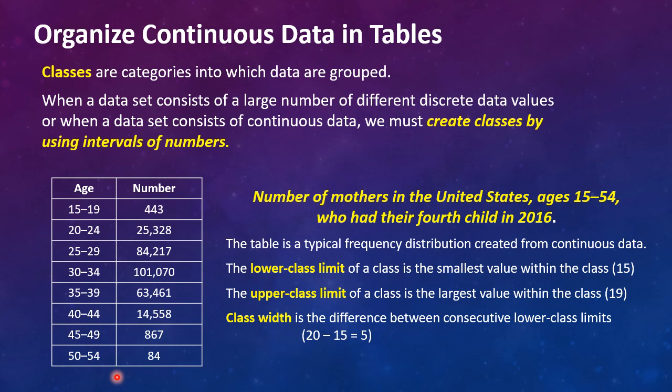When we talk about limits, the lower class limit of a class is the smallest value within the class. So talking about just the first class, the lower class limit is 15. The upper class limit is the largest value. So that's 19. And the class width is determined by the difference between consecutive lower class limits. So here we would take 20 minus 15 to find the class width, which is 5.